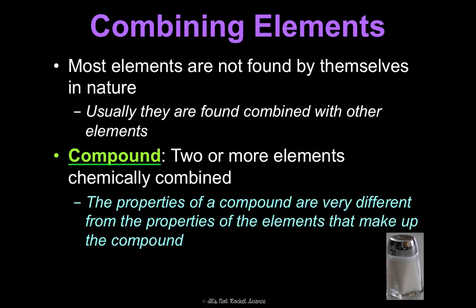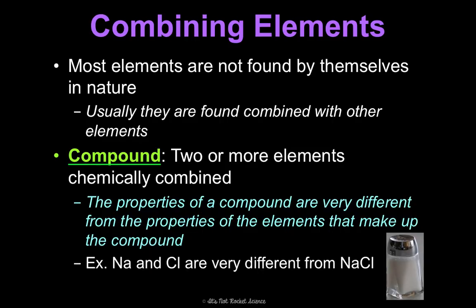Something really important that we emphasized in the matter unit: the properties of a compound are very different from the properties of the elements that make up the compound. Remember, sodium and chlorine are very different from sodium chloride. Sodium is explosive and chlorine is poisonous, but when they're chemically combined they are a new substance — sodium chloride, NaCl — and that's table salt, what you eat on a lot of food.